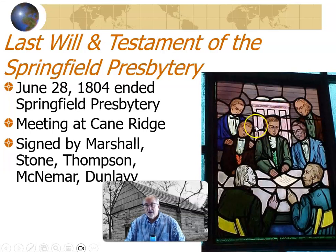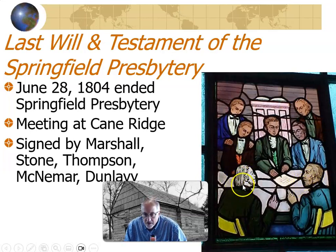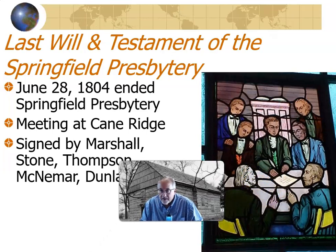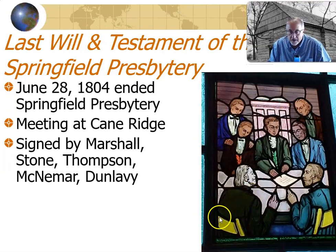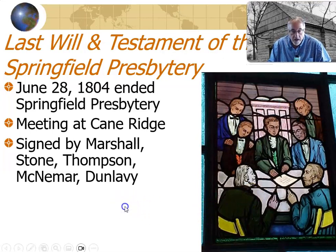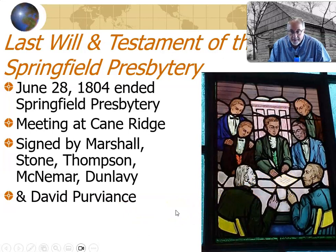They have a meeting at Cane Ridge and sign the Last Will and Testament of the Springfield Presbytery. You can see them doing this in a stained glass window from the superstructure around the Cane Ridge Meeting House. We have the five who are here — Marshall, Stone in the center, Thompson, McNamara, Dunleavy — and David Purviance will join them. There's a mysterious ghost-like, very pale figure there — some suggest the artist put it in for balance, others say it represents Jesus. David Purviance, who joined in that six months, will also sign it.